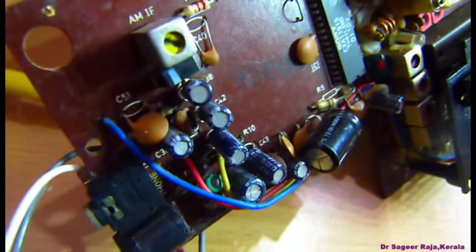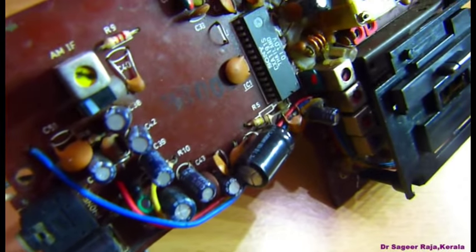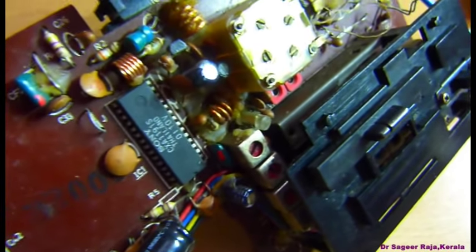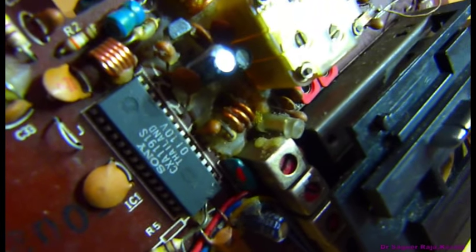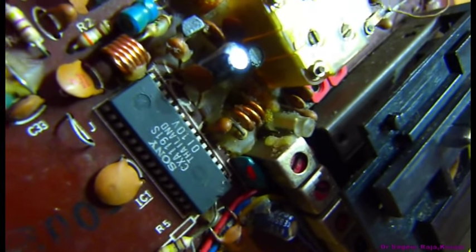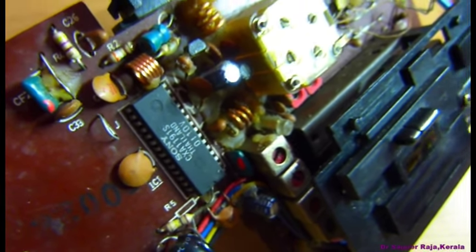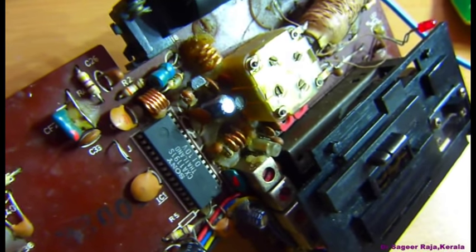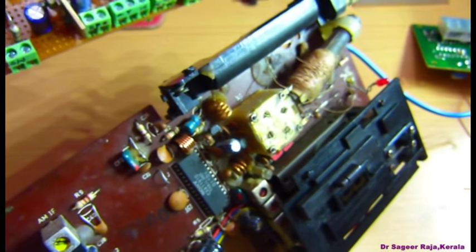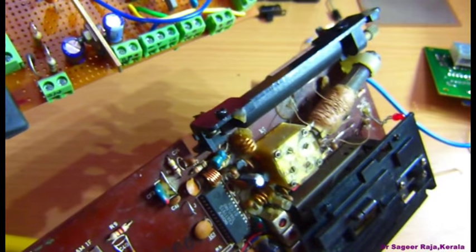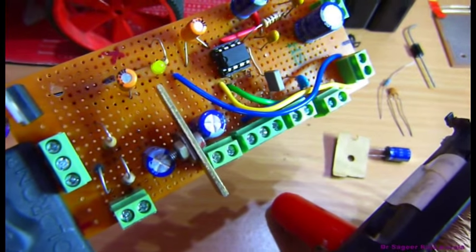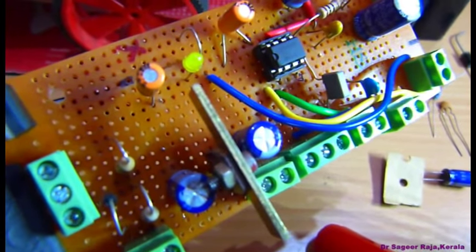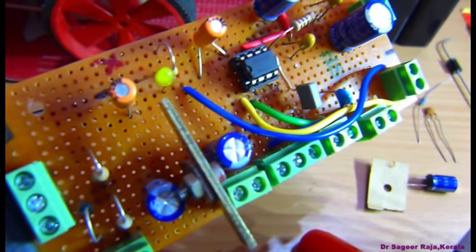The main problem was that most of the circuit became aged and the amplifier section became very poor in audio quality. So I decided to make a board separately for this world receiver. This is the board which contains the IC LM386.